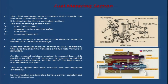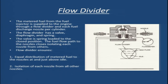Some injector models also have a power enrichment jet in this section. To summarize: in the fuel injection system, fuel from the engine-driven fuel pump goes to the fuel injector, which has three parts — air flow section, regulator section, and fuel metering section — and meters fuel according to the volume of airflow, supplying the metered fuel to the flow divider.